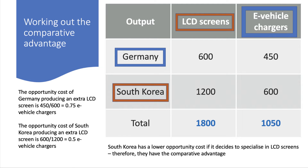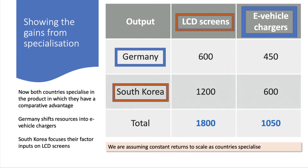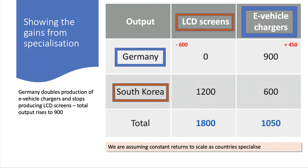On that basis, South Korea will shift some resources into LCD screens and Germany will shift resources into e-vehicle chargers — in other words, they will specialize. Now we need to show the gains from specialization, assuming constant returns to scale. Of course, once you challenge that assumption you might get a different result — it's one of the simplifying assumptions of this famous model. Germany stops producing LCD screens; they have the absolute disadvantage so they're better focusing on e-vehicle chargers. Germany doubles production of e-vehicle chargers but stops producing LCD screens — they go down from 600 to 0 on LCD but add 450 vehicle chargers, taking them up to 900.